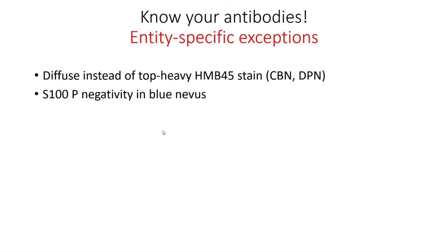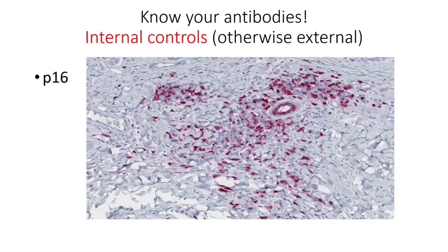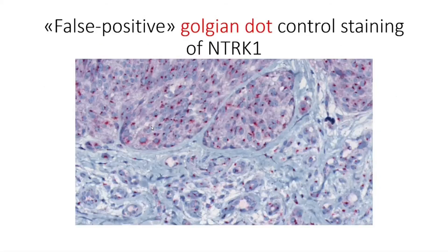Some of the patterns can be specific for certain entities. For example, if you have a diffuse instead of a top-heavy HMB45 stain, this is expected in a cellular blue nevus or in a deep penetrating nevus. Another example is the loss of S100 expression in the blue nevus group. It's also important to know your internal controls, especially if you're expecting to assess a complete loss of expression. The NTRK1 can have a golden dot controlled staining found not only in the epidermis, but also in vascular structures as well as negative melanocytes.